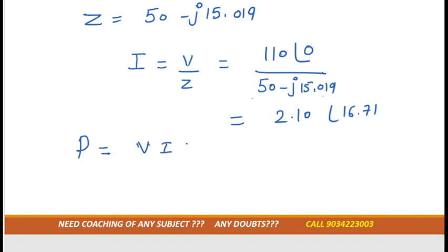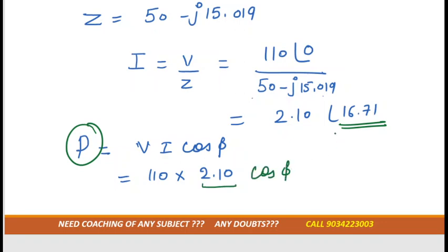Now we can easily calculate the active power. Active power is V I cos phi. V is 110 and current is 2.10. Just remember one thing, in the case of power we'll never take angle. We'll just take the magnitude. Cos phi, phi is 16.7. Phi is basically the angle between voltage and current.